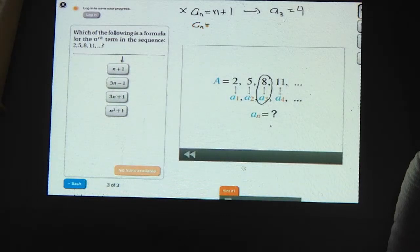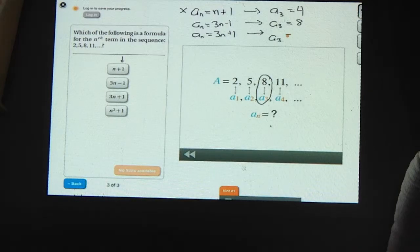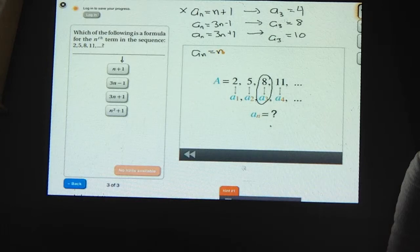The next one says that a sub n is equal to 3n minus 1. Putting in 3 for n there tells us that a sub 3 is going to be 8. 9 minus 1 is 8. That looks okay. Let's keep going. A sub n for the third formula, 3n plus 1. That says that a sub 3 is going to be 3 times 3 plus 1, which is 10. And finally, the last formula says that a sub n is equal to n squared plus 1. And that would tell us that a sub 3 equals 9 plus 1 or 10 again, which is also wrong.